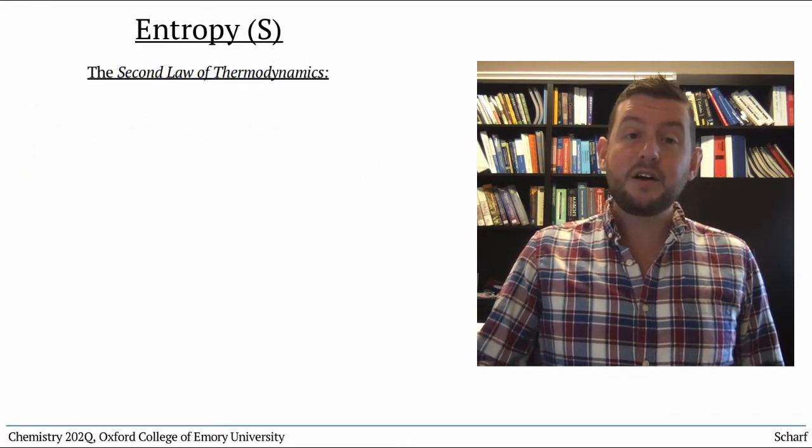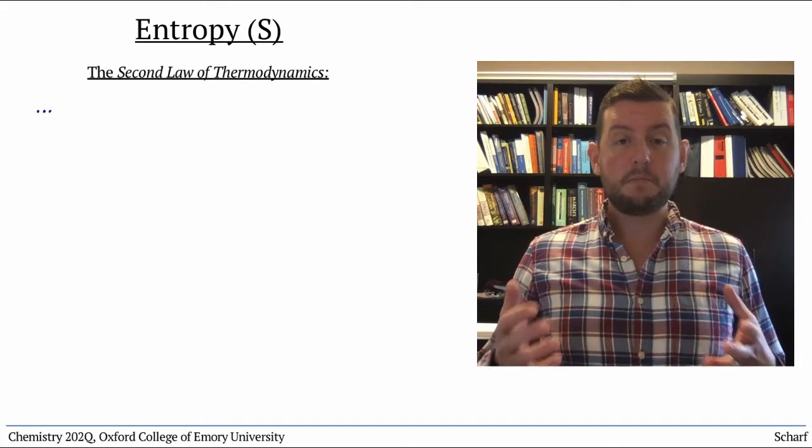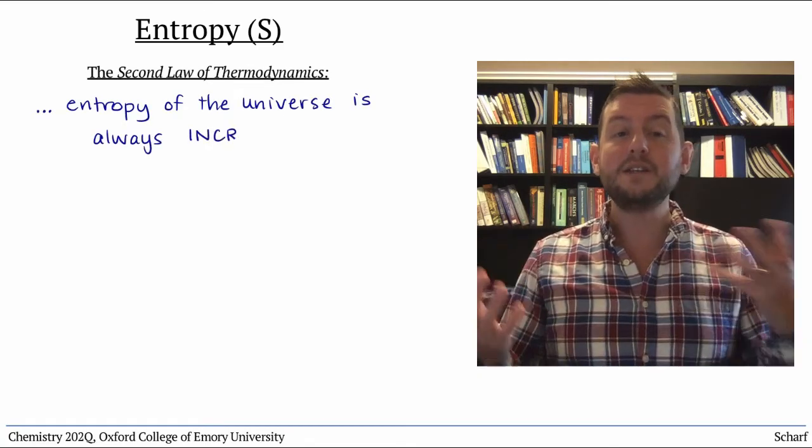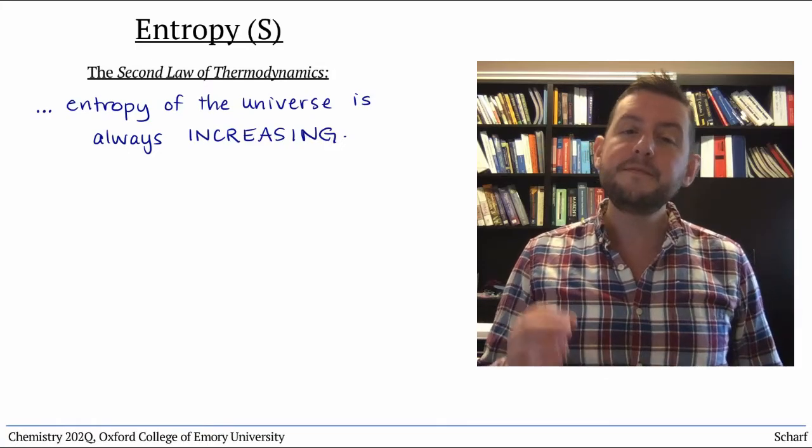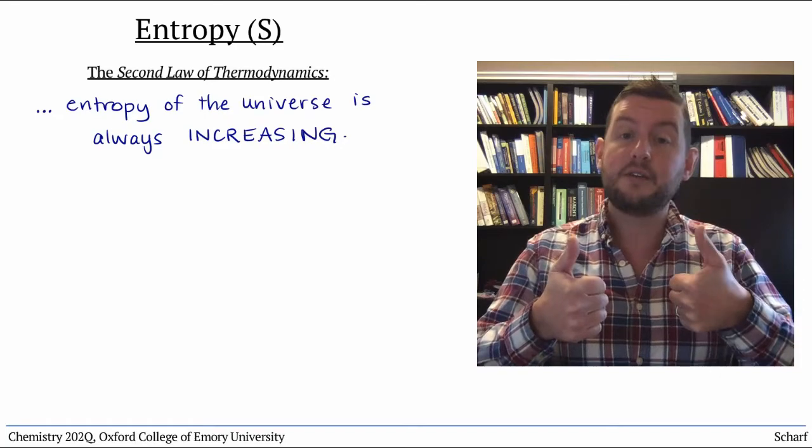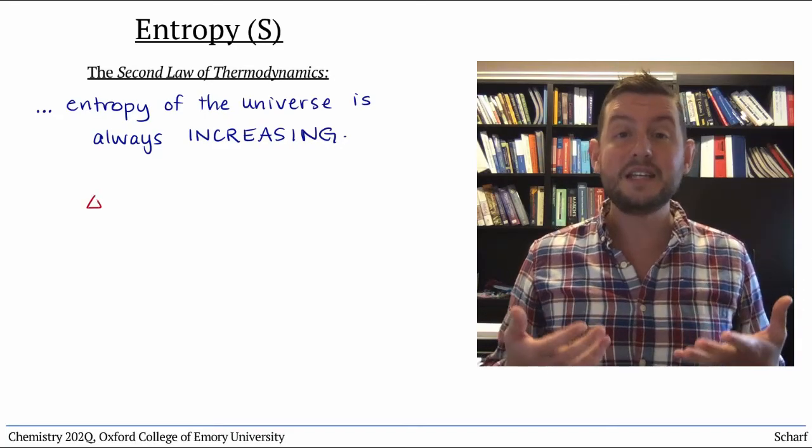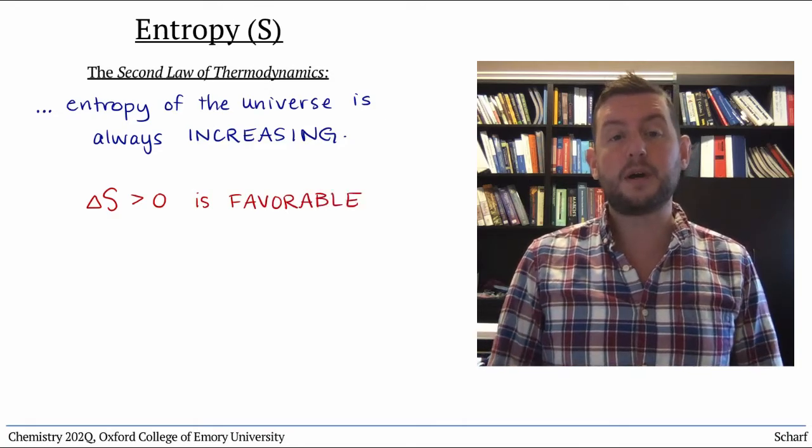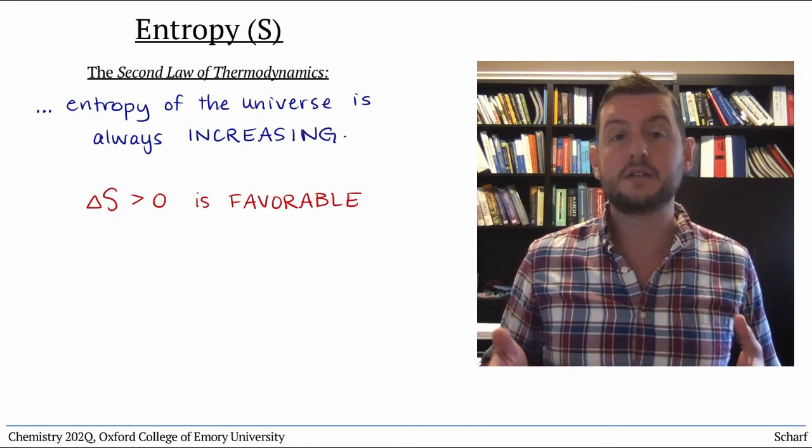The second law of thermodynamics says, in part, that the entropy of the universe is always increasing. So any physical or chemical process that increases in entropy, that is, for which delta S is positive, is a favorable process, at least as far as entropy is concerned.